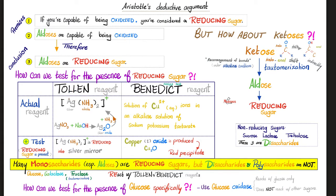You can use the Tollens reagent, also known as the Tollens test, or the Benedict reagent, also known as the Fehling test. How do I know that this test turns positive? The color will turn into a silver mirror, proving the existence of a reducing sugar in your sample. As for the Benedict reagent or the Fehling test, copper oxide is produced, which will give you a red precipitate at the bottom of your tube. This is a positive test.